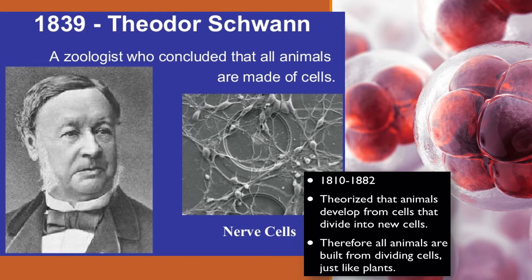In 1839, Theodor Schwann, a zoologist, concluded that all animals are made of cells. From 1810 to 1882, he theorized that animals develop from cells that divide into new cells. Therefore, all animals are built from dividing cells, just like plants.